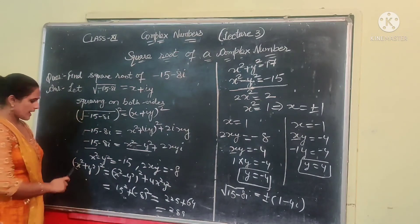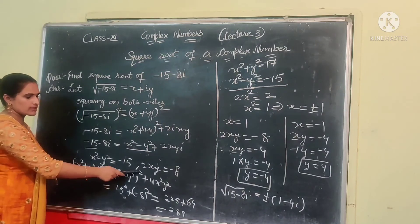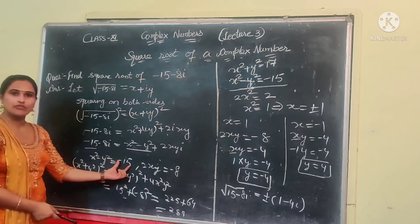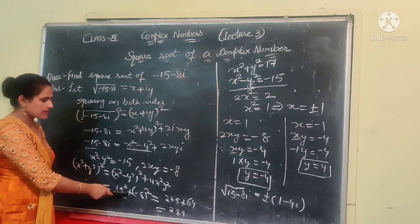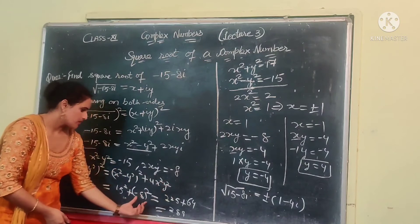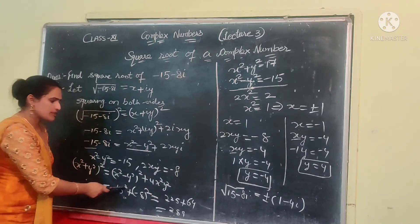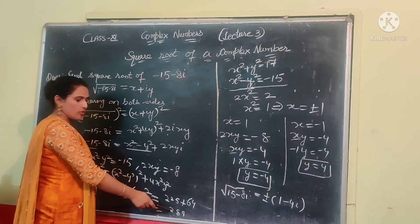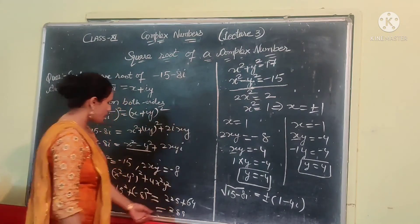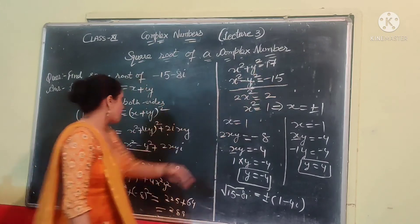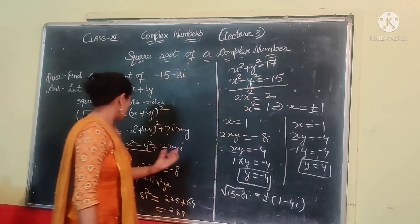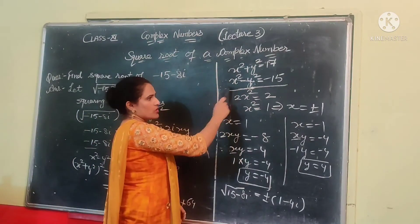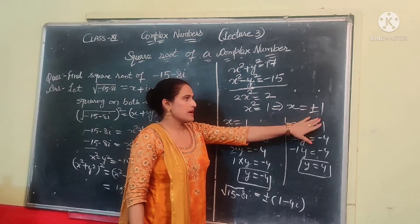According to the formula, (x squared plus y squared) squared equals (x squared minus y squared) squared plus 4x squared y squared. Substituting: (minus 15) squared plus (minus 8) squared equals 225 plus 64 equals 289. Therefore, x squared plus y squared equals the square root of 289, which equals 17. Also, x squared minus y squared equals minus 15. Solving these two equations, we get x equals plus or minus 1.